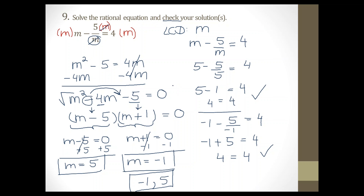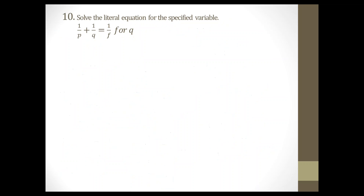Question number 10: solve the literal equation for the specified variable. A lot of students have a very hard time with this question. I always say just focus on that one particular letter — in this case Q. We are solving for Q. Don't get too caught up with the other letters; just do the steps. Q is right here. My first step is to move the other term away from Q to the other side — subtract 1 over P from both sides.